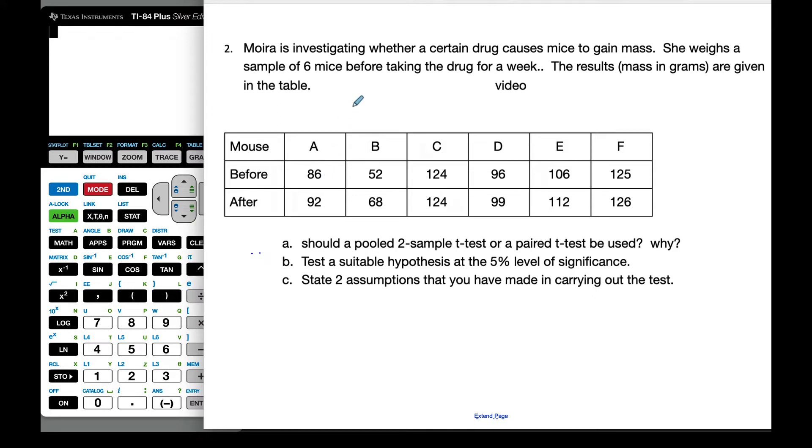So in this example here, Moira is investigating whether a certain drug causes mice to gain mass. She weighs a sample of six mice before taking the drug for a week. The results in mass are given in the table.